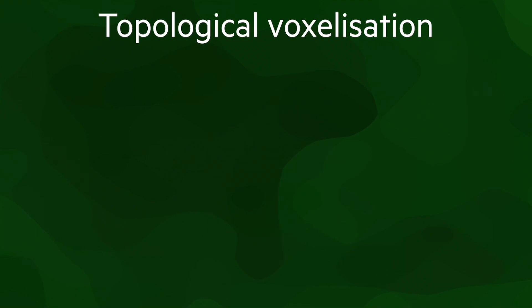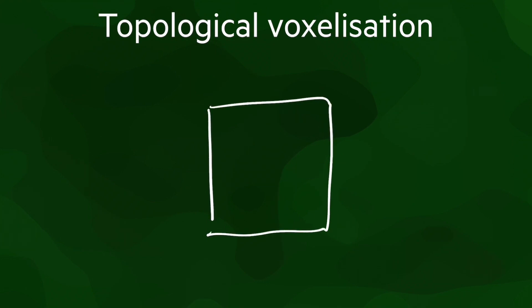If we want to achieve 4-connectivity instead, we have to detect all the cases where a line enters a raster cell, and so we need all 4 edges of the cell as targets.